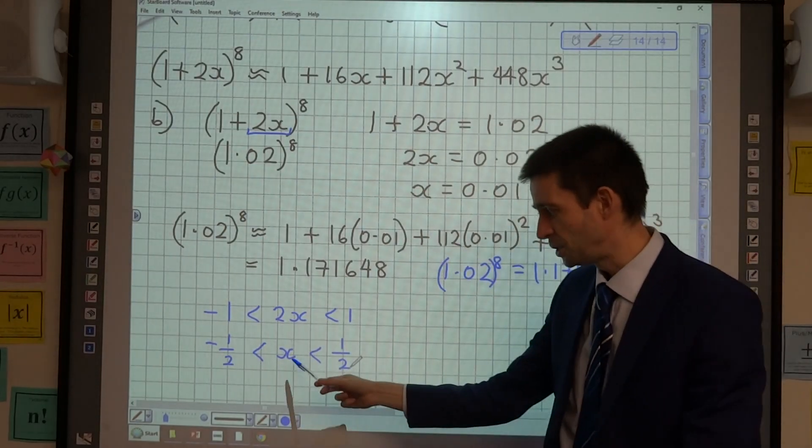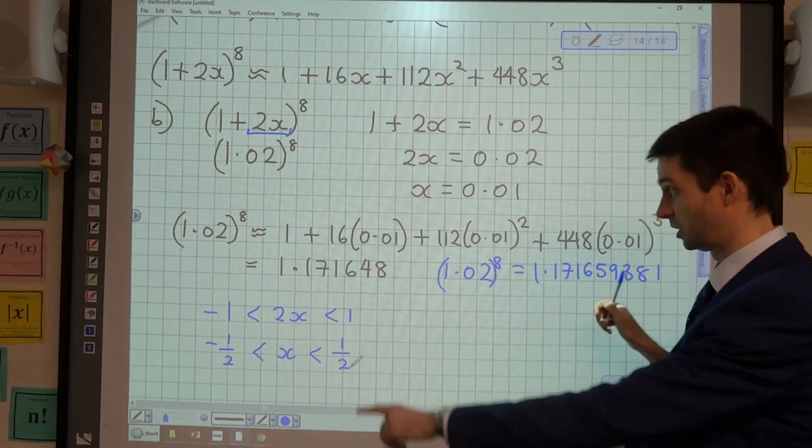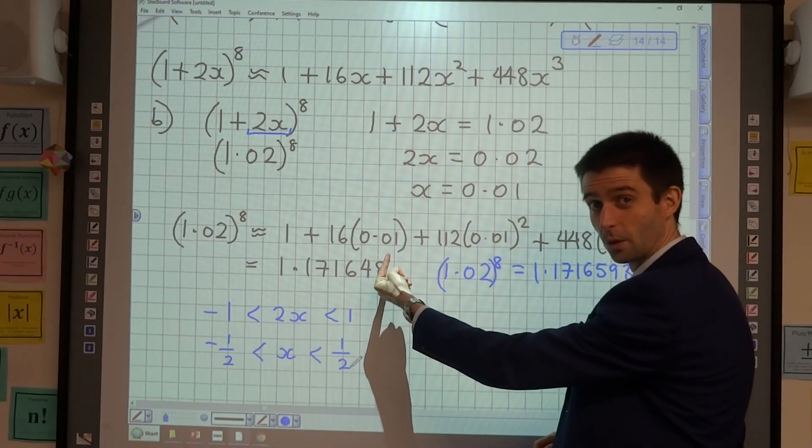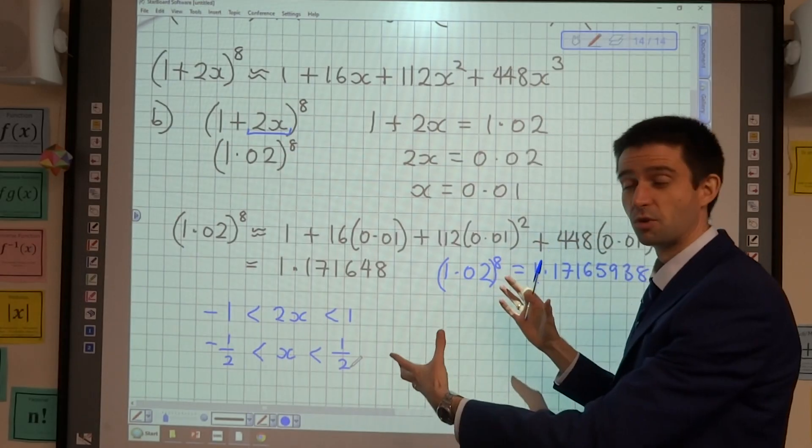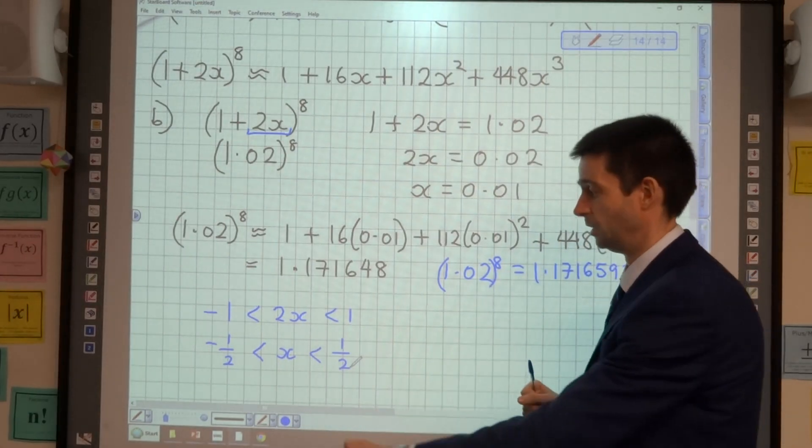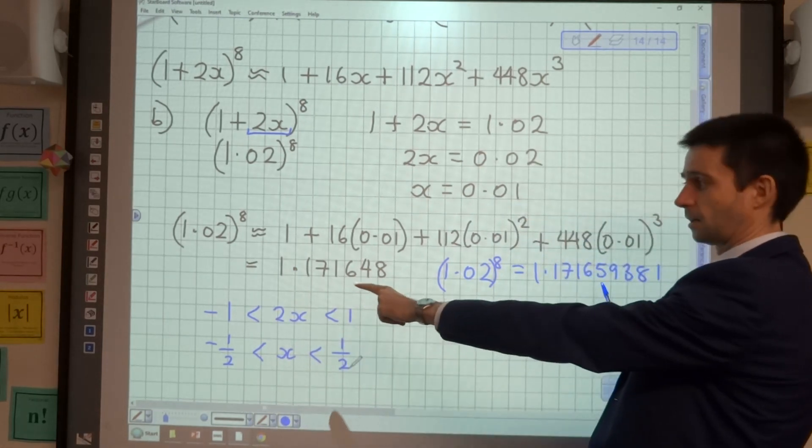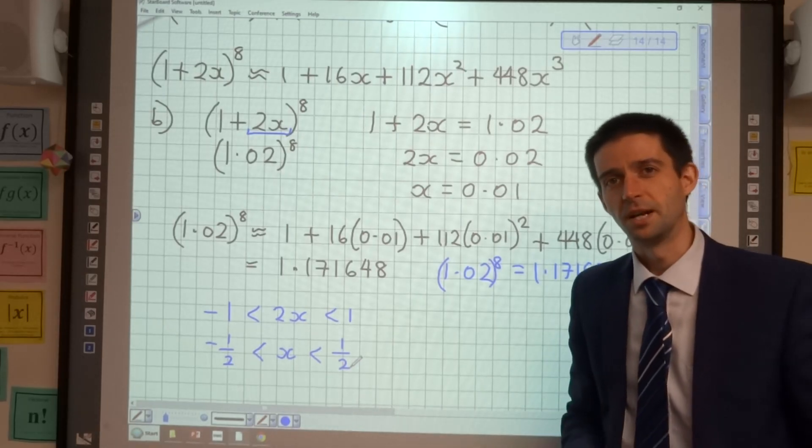And what that means is if I use an x value in this interval, I'm going to get an answer for my approximation that's quite close to the real one. As you can see here, what we did, 0.01. If I use a value of x that's outside this range, my approximation is not going to be very good. So you should only use these approximations for small values of x, and then you'll get an answer that's quite close to the true one. Thanks very much for your company.